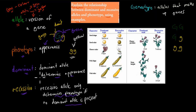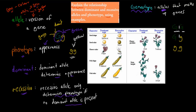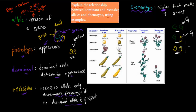Even though the syllabus doesn't explicitly mention genotype, we should also know what genotype is. Genotype is just the alleles — the versions of a gene that make up the organism's genetic information. With pea plant colour there were three different genotype combinations: double big G, big G and small g, and double small g. The phenotype for the first two was green, and only double small g gave yellow — because with two recessives, there's no dominant green to overshadow them.